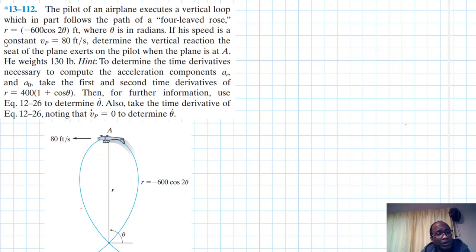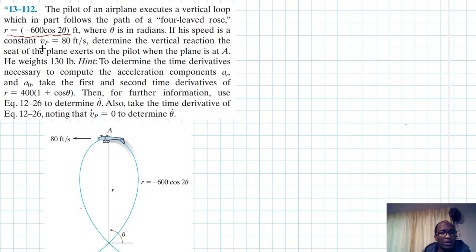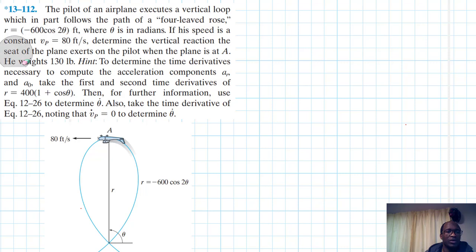The problem reads: the pilot of an airplane executes a vertical loop which in part follows the path defined by the function r. If his speed is constant at 80 feet per second, determine the vertical reaction the seat of the plane exerts on the pilot when the plane is at A. The pilot weighs 130 pounds.